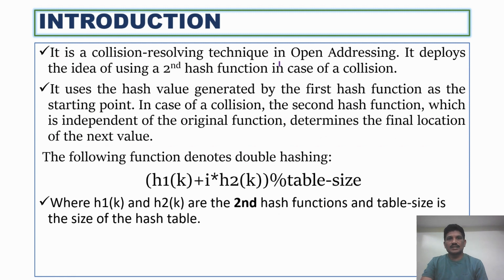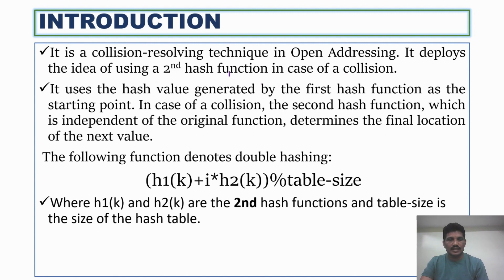Double-hashing is a collision resolution technique in open addressing. There are three methods in open addressing for resolving collisions: linear probing, quadratic probing, and double-hashing. It deploys the idea of using a second hash function in case of collisions. When collision occurs, we go for double-hashing, which means hashing again — we hash two times for resolving collisions.